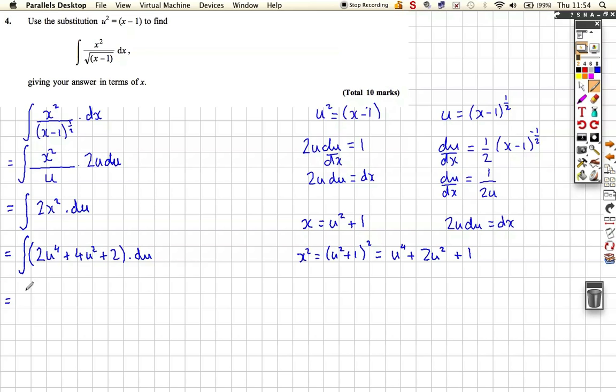And that makes our life a lot easier now. That means that we've got, well increase the power by one divide by the new power, so that's 2 over 5 u to the power five, plus increase the power by one, 4 thirds u to the power three, plus 2u plus our constant of integration C, which is great.